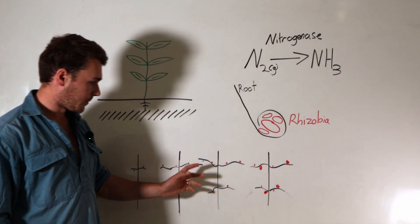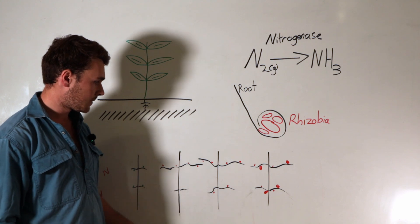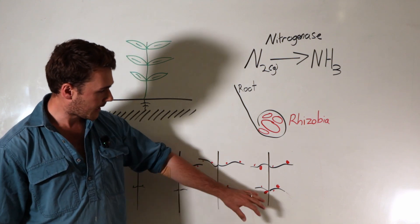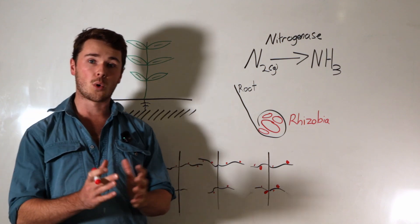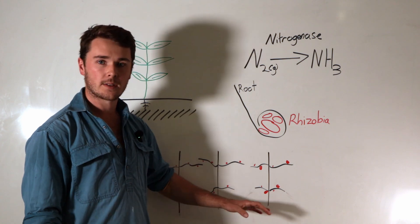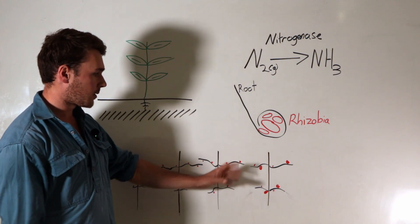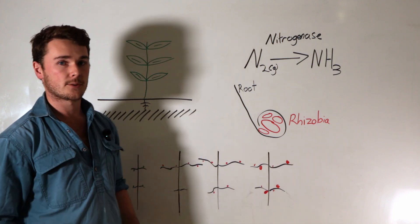Next, we have a good distribution of small nodules throughout the root system. This is pretty good. And then finally, and the most or the best, is that we have very large nodules, so more than half a centimeter in diameter throughout the root system. This is where we want to get to. We want to have lots of just nodules all over it with some really large ones.